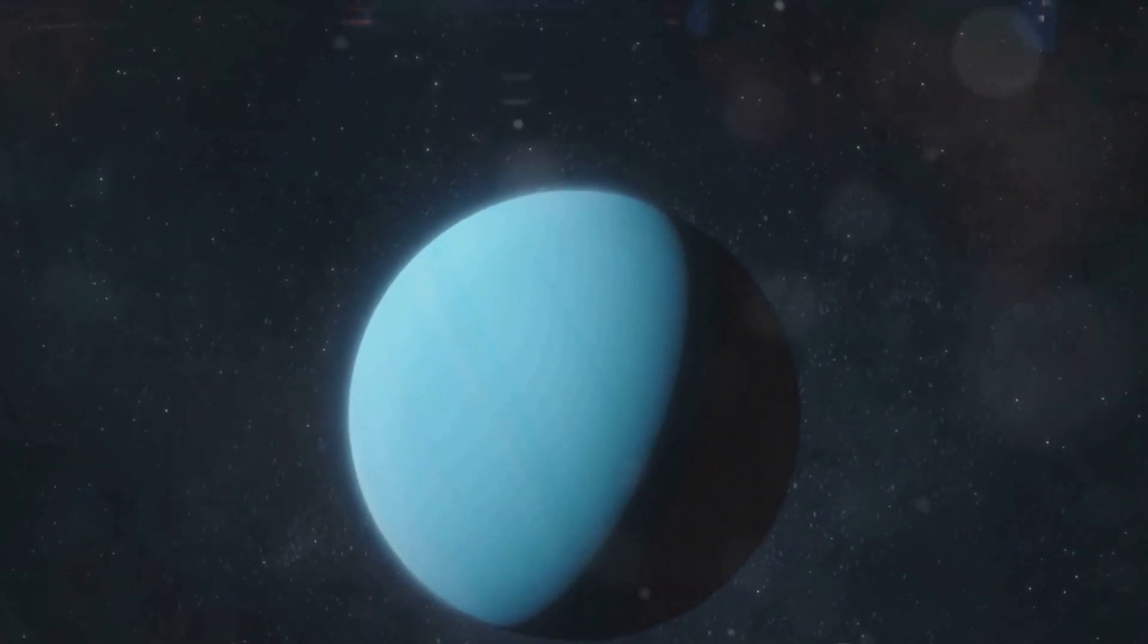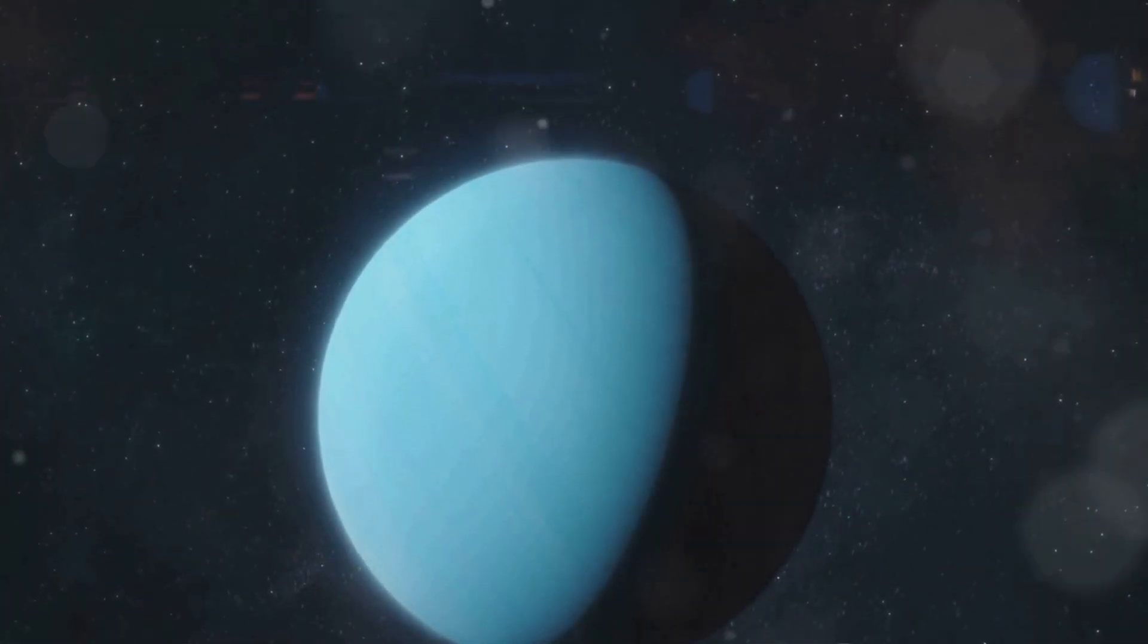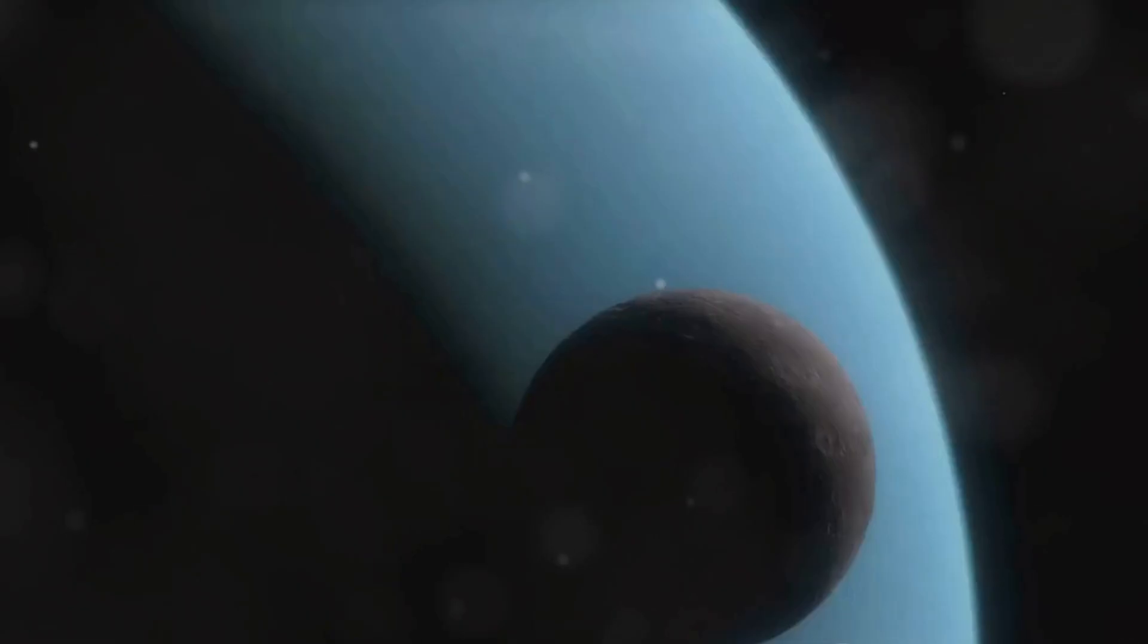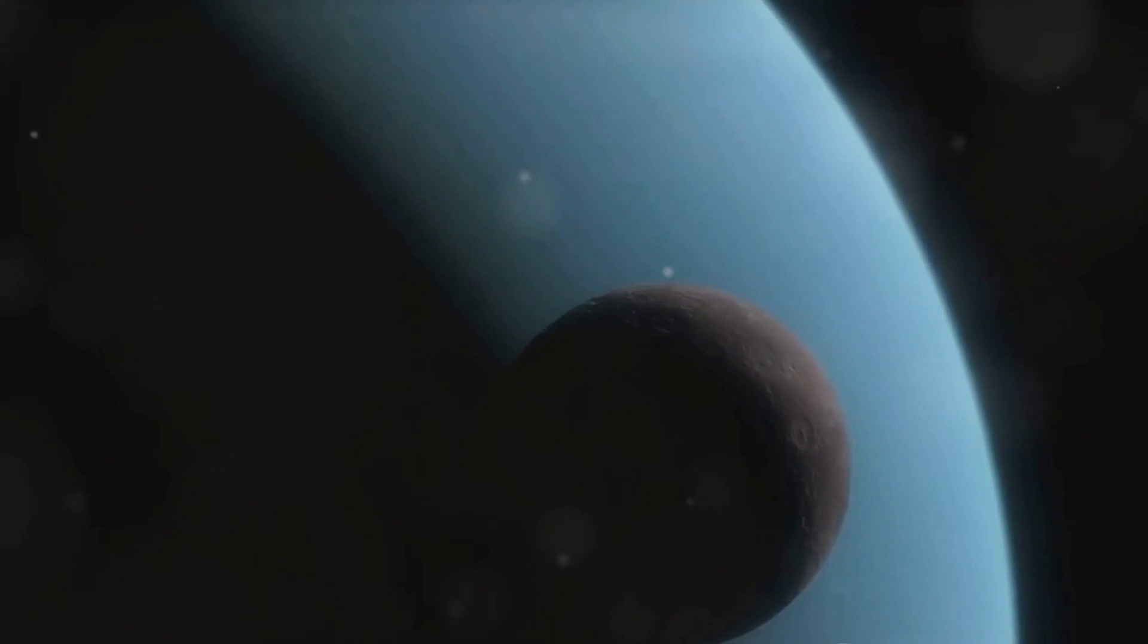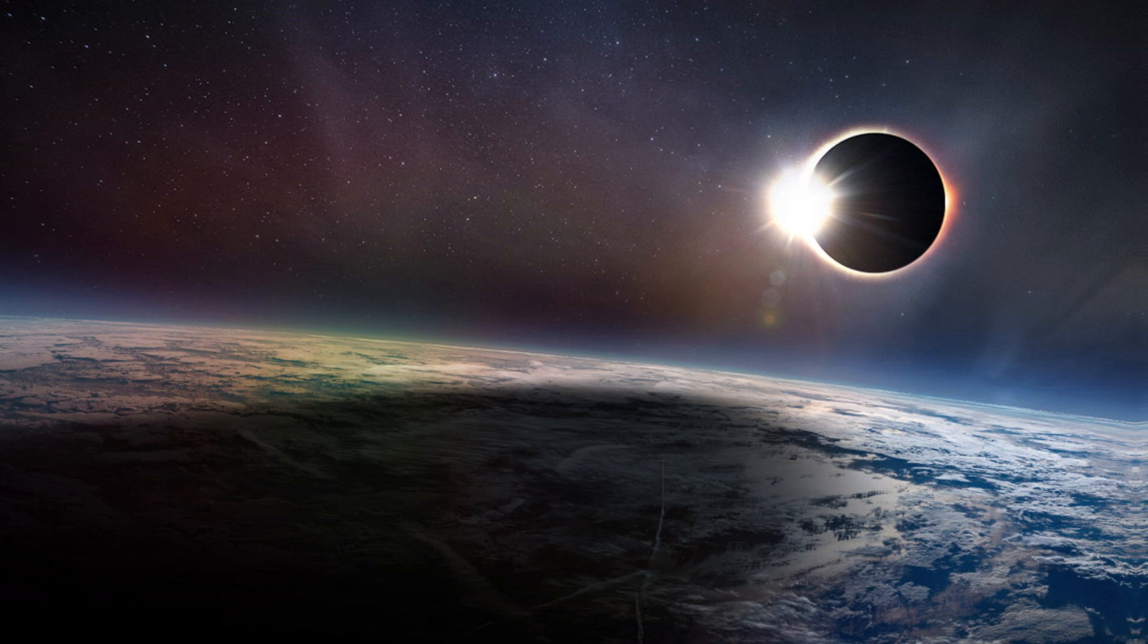Uranus and Neptune, both with a multitude of moons, also experience solar eclipses. However, due to their significant distance from the sun, these events are less dramatic and more akin to subtle shifts in light. The view of a solar eclipse varies greatly from planet to planet, offering unique and awe-inspiring cosmic displays.